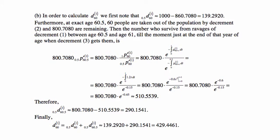For part b, to calculate d₆₀⁽¹⁾, we first note that deaths from decrement 1 in the first half of the year, from age 60 to 60.5, equal 1000 minus 860.708, which is 139.292. Then at exact age 60.5, the 60 people removed by decrement 2 are taken out, leaving 800.708 remaining.